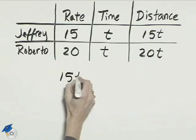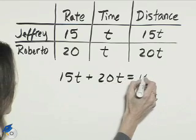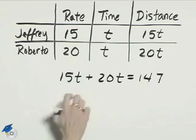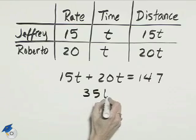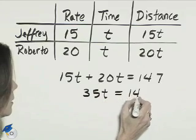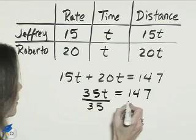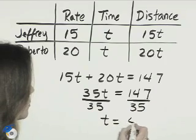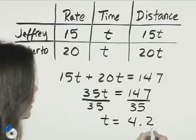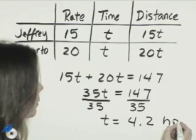So we'll have 15t plus 20t equals 147. Now we can add the 15t and the 20t, that becomes 35t equals 147. And divide both sides by 35. Then t is 4.2, and the time that each travels is 4.2 hours.